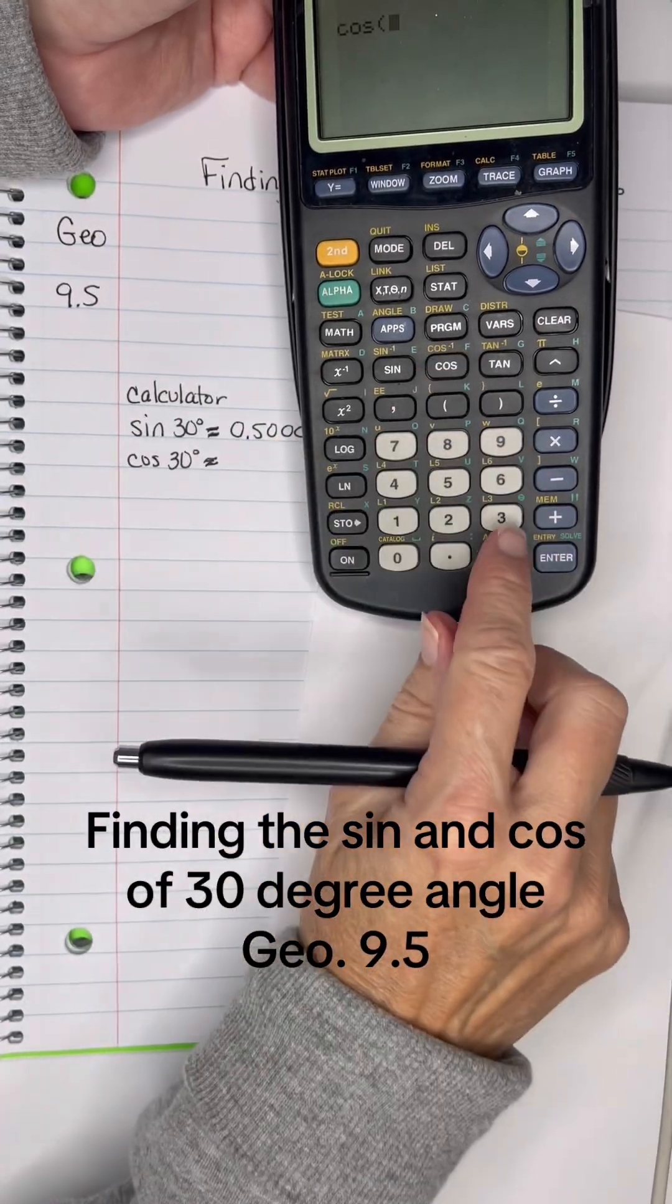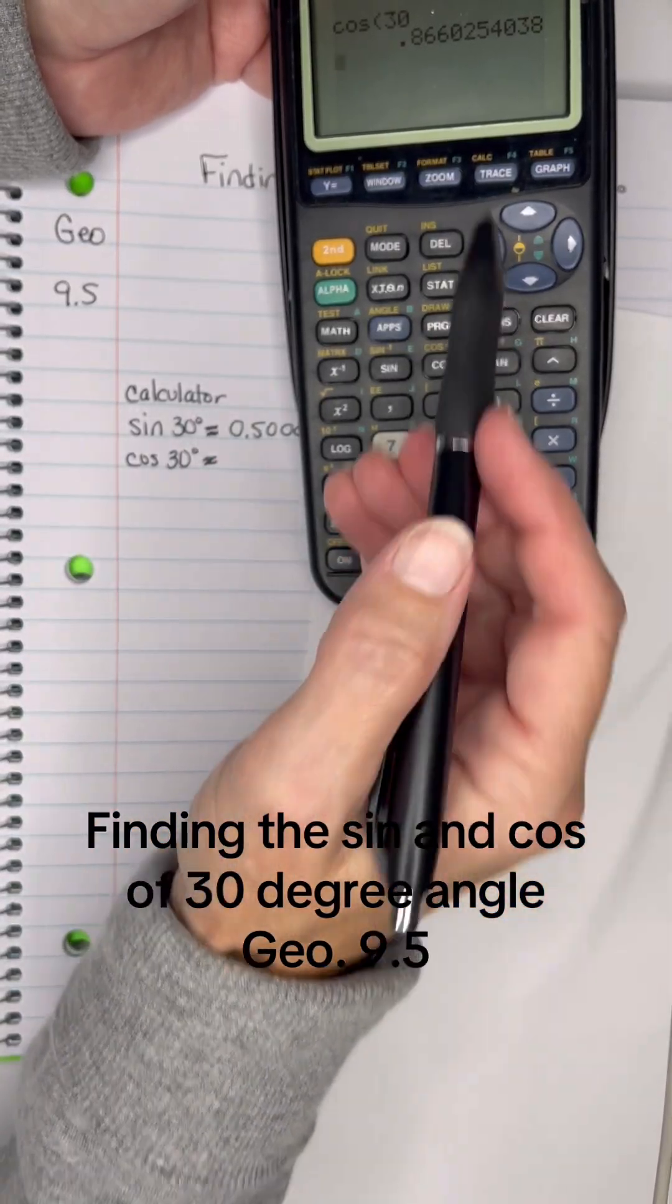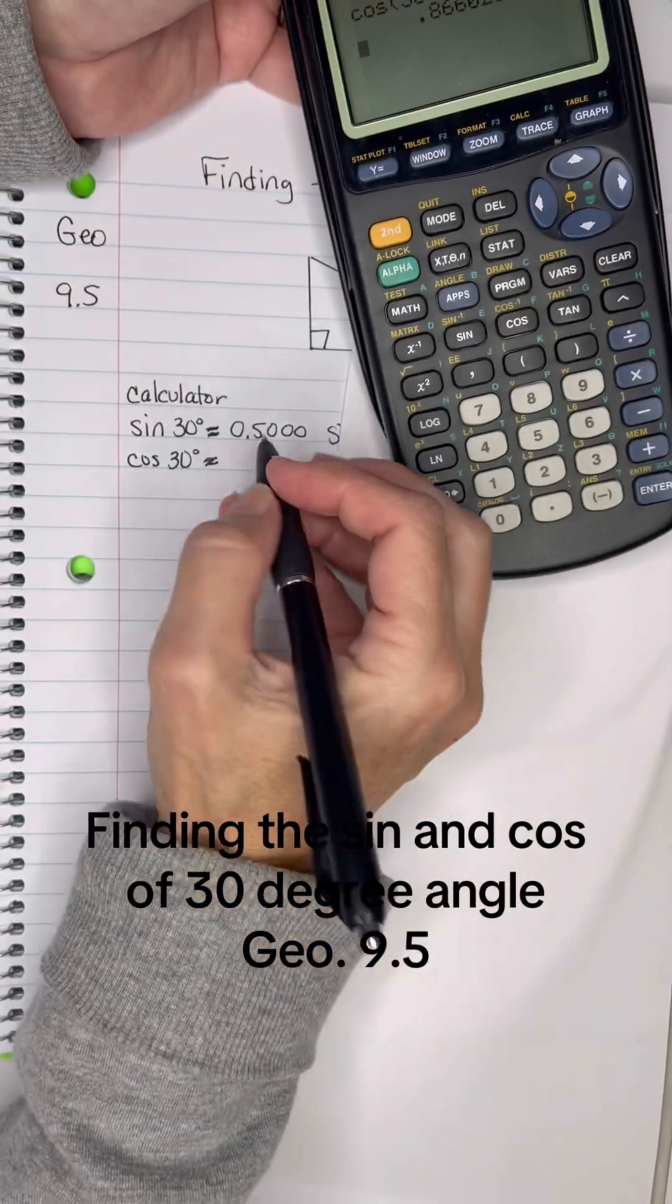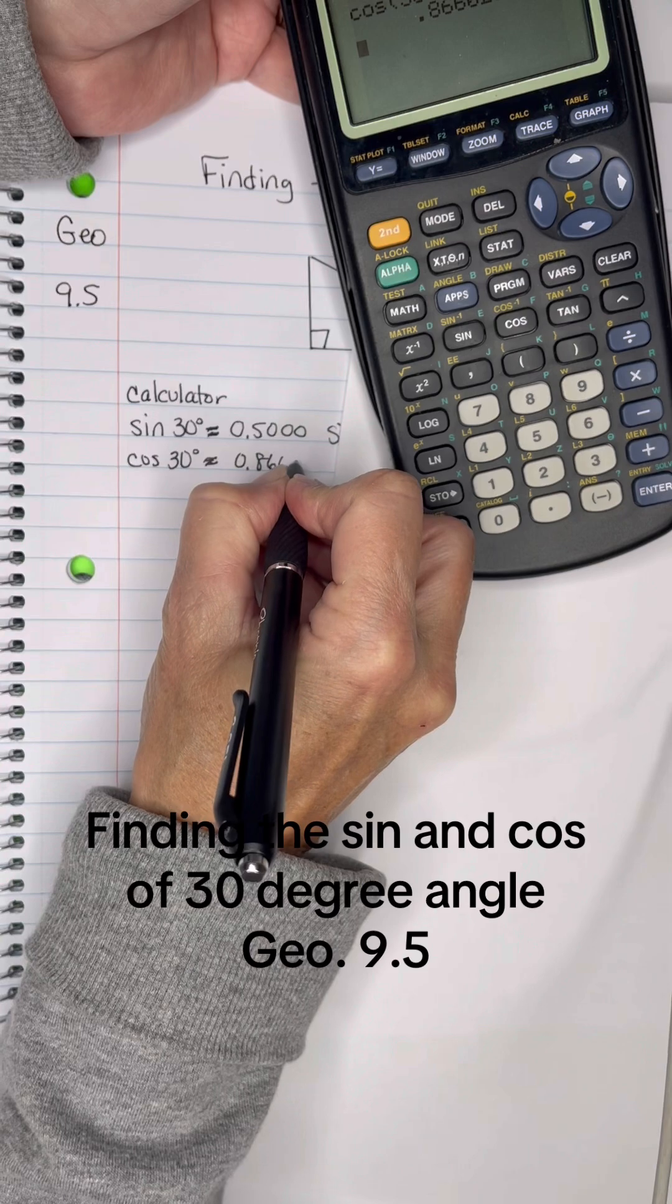Now let's do cosine of 30, and that will be 0.8660, that zero will stay a zero, so that is approximately 0.8660.